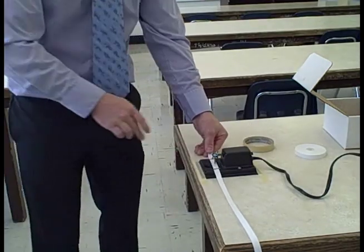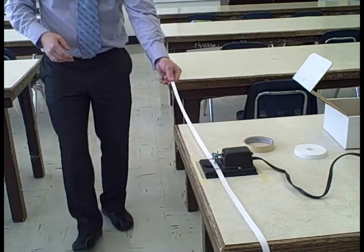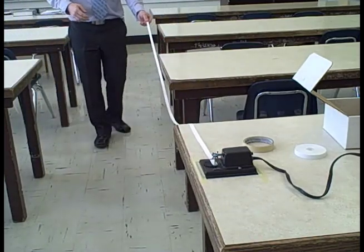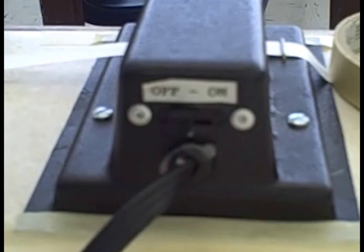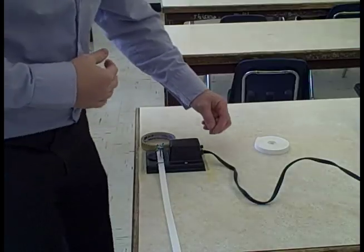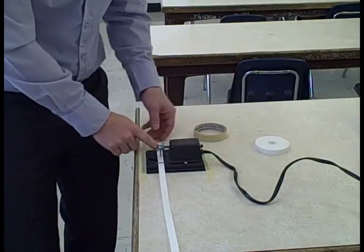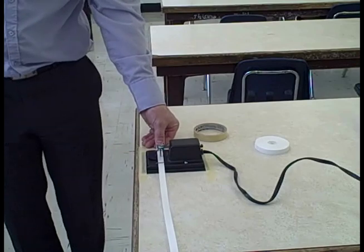Next, practice pulling the tape through the timer so that it takes approximately 2 seconds to pull the full 2 meter piece through. Once you feel comfortable with your timing, locate the on-off switch on the side of the timer. Turn the timer on and pull the tape through at as constant a velocity as you can.